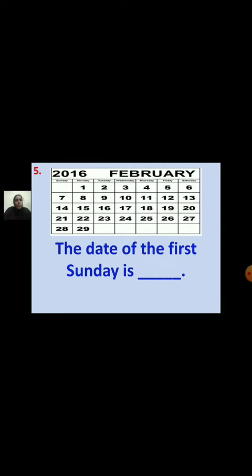Fifth question: The date of the first Sunday is dash. To find the date of the first Sunday, you will see the Sunday column. You can see the days of the week written at the top — Sunday, Monday, Tuesday, Wednesday, Thursday, Friday, and Saturday. Look at the Sunday column and find the first date. Yes, it is the 7th.